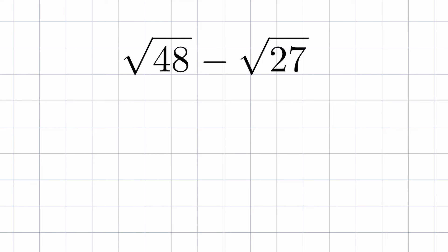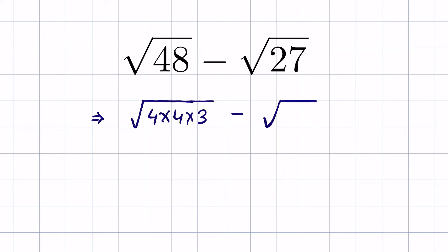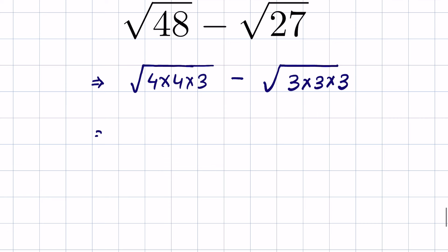Square root of 48 minus square root of 27 — how to subtract square roots. Let's first simplify these square roots. Square root of 48 we can write as 4 times 4 times 3, since 4 times 4 is 16 and 16 times 3 is 48. And 27 as 3 times 3 times 3.